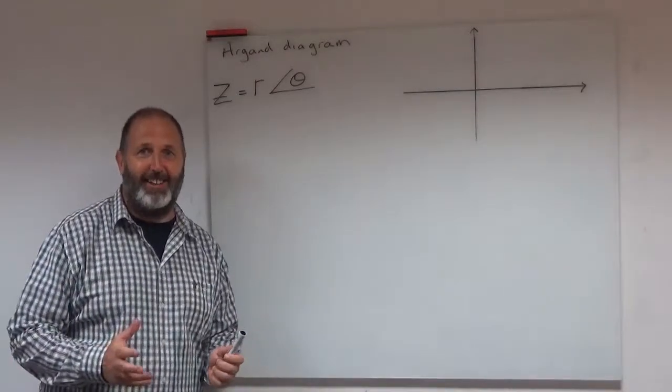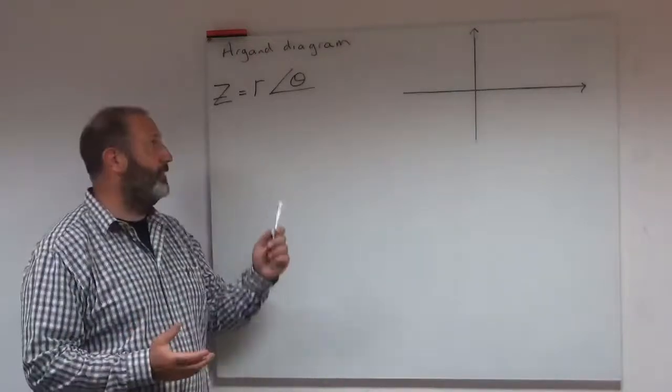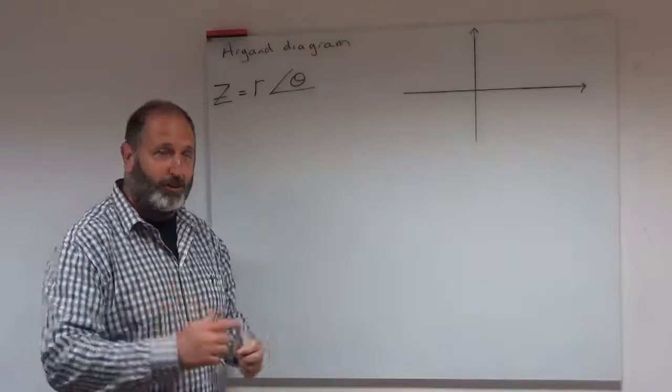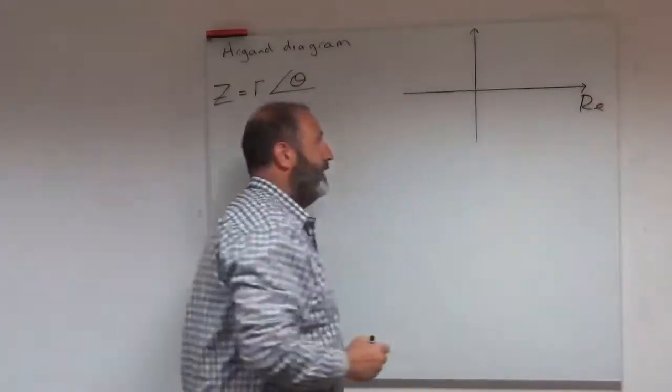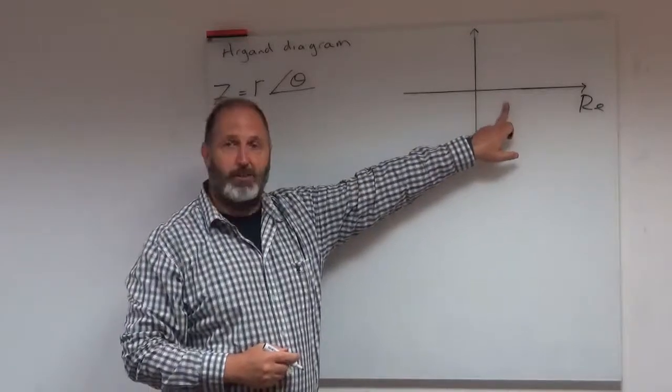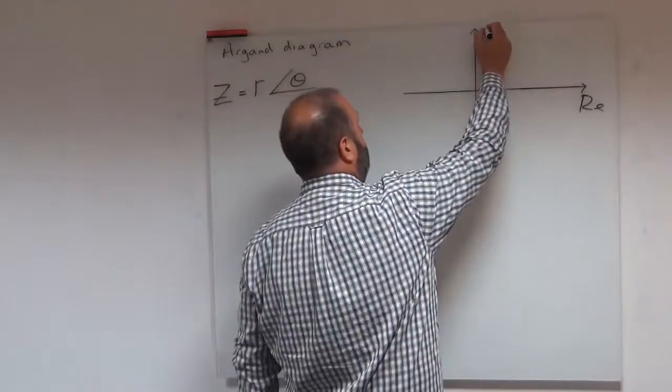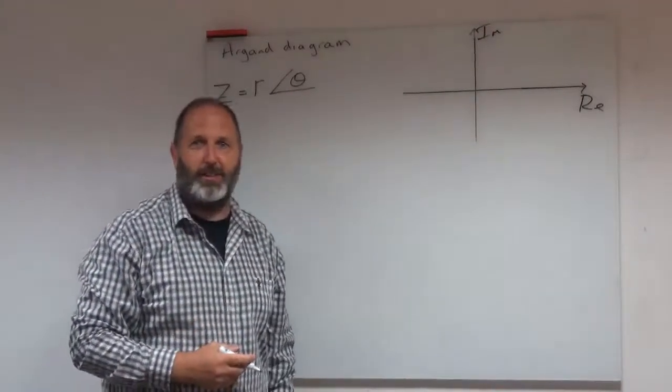A short video looking at sketching the Argand diagram when our complex number is in polar form. We have a look over here at the axis. The first thing we need to make sure is that the horizontal axis is always the real term and the imaginary term is always the vertical or the y-axis, if you will.